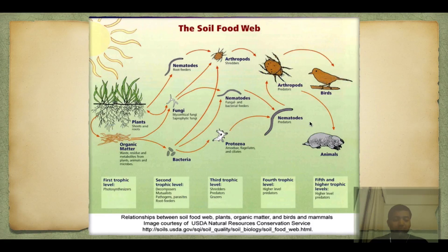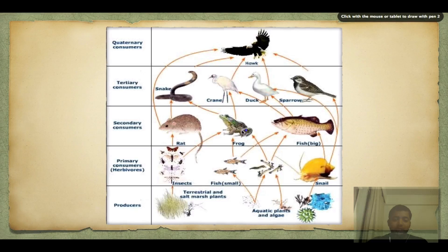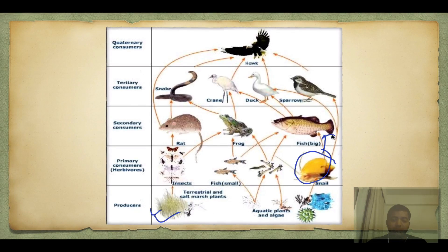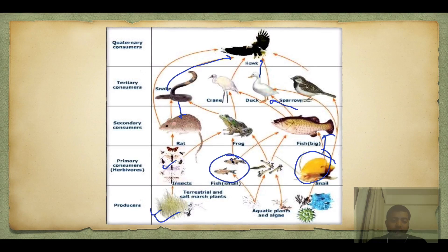Another familiar example: a producer eaten by a snail, snail eaten by a fish, fish eaten by duck, duck eaten by hawk. Similarly snake can be eaten by hawk, snake can eat rat, rat can eat insects. Fish can also be eaten by frogs. So it's a very complicated network — as the complexity increases it's good because it's less prone to extinction.